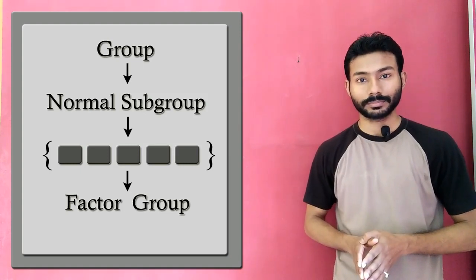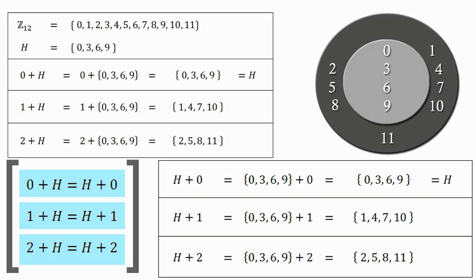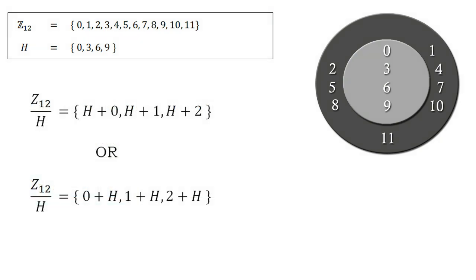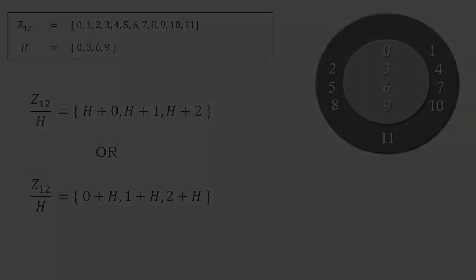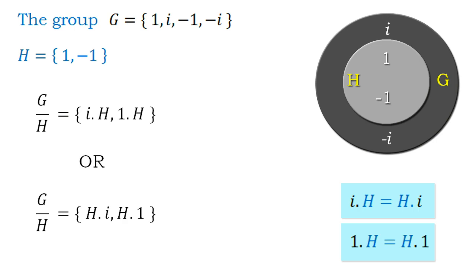In our first example, these were the three different cosets of H in Z12. A quotient group is simply a collection of all the cosets of a subgroup. So the quotient group of Z12 by H contains exactly these three cosets. In our second example, the two cosets of H in G form the quotient group G by H, which contains exactly those two cosets.